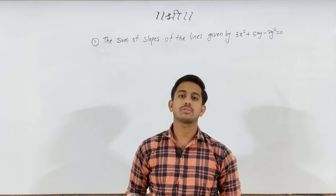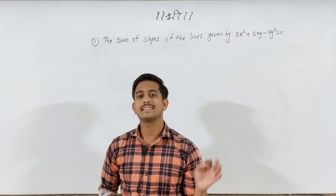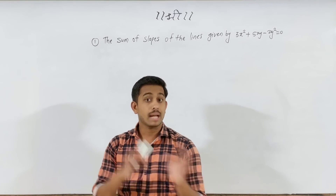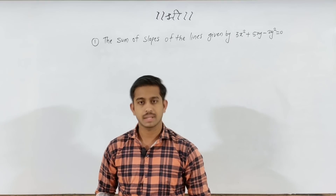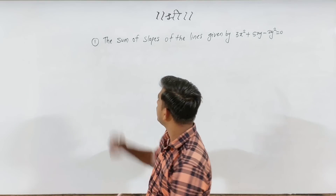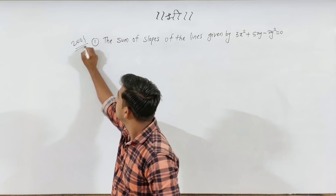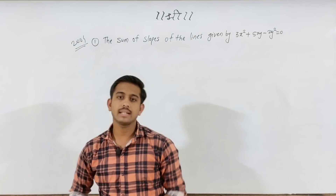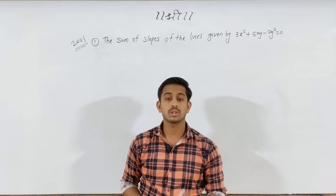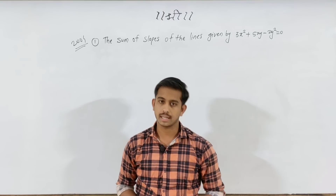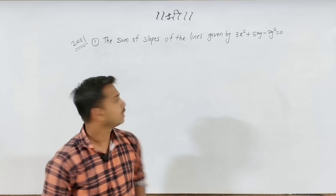Today we are going to do a pair of straight lines. One example of this type is in the application book. This example appeared in 2004 in CET, but this type also appeared in 2019 and in 2018. Let's see what it is.